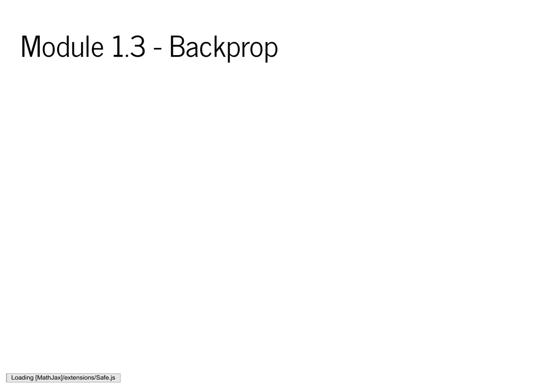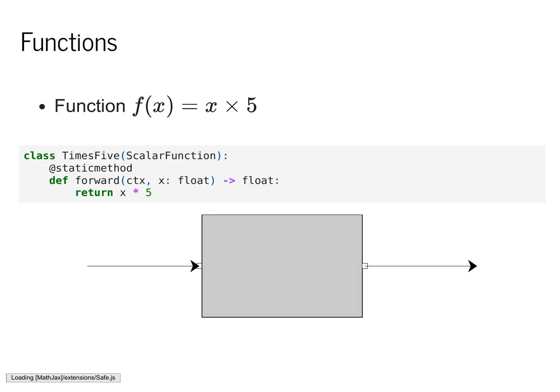Welcome back to MiniTorch. In module 1.3, we're going to dive into the details of backpropagation. Recall from last class, we defined a function f of x equals x times 5 in Python by inheriting from the scalar function static class.